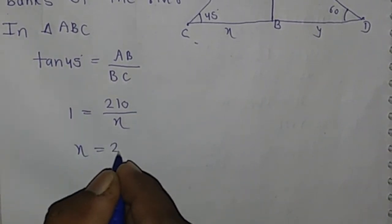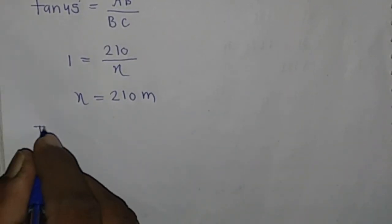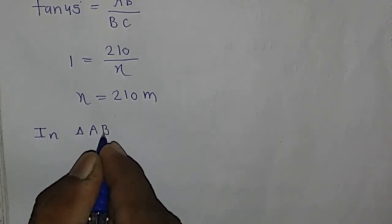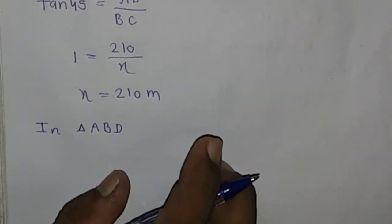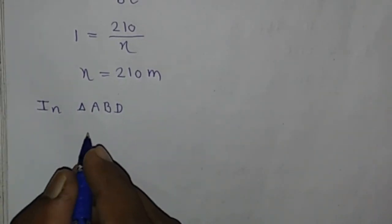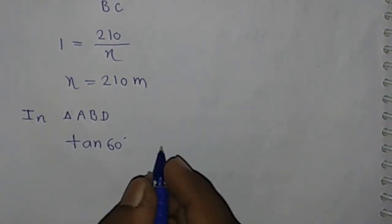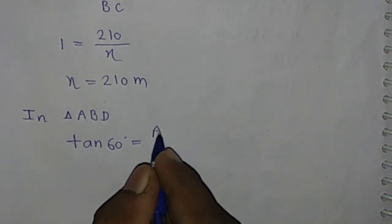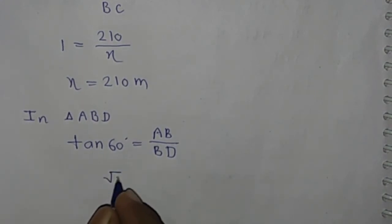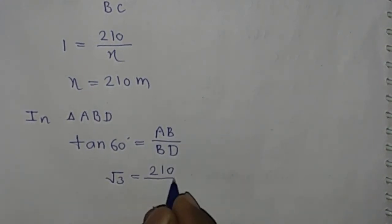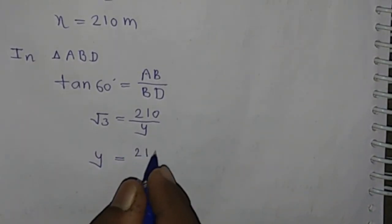Similarly, in triangle ABD, we apply tan 60°. Tan 60° equals √3. The perpendicular is 210 meters and the base is y. So tan 60° = 210/y, which means √3 = 210/y, therefore y = 210/√3.